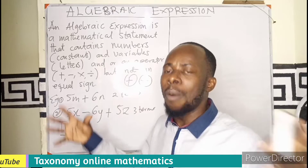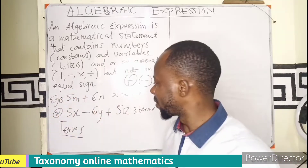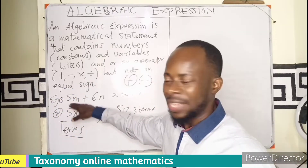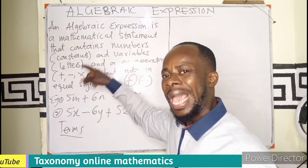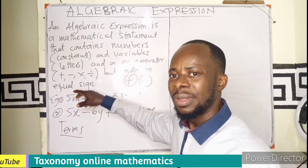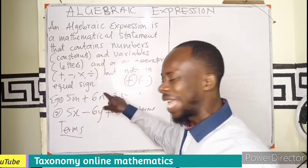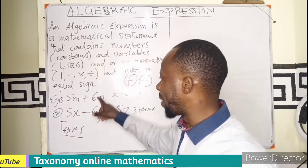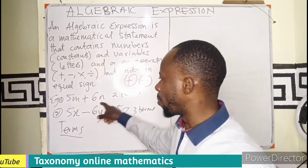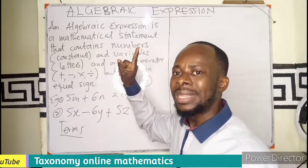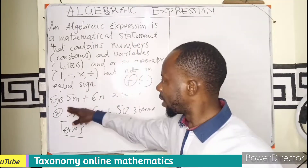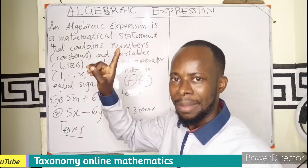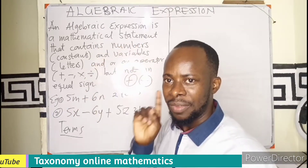Multiplication and division do not give us a term — they combine terms. As you can see, 5M is 5 times M, and 6N is 6 times N, but each is combined as one term.